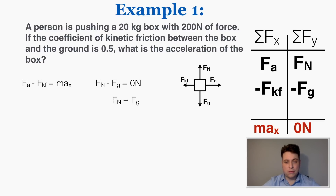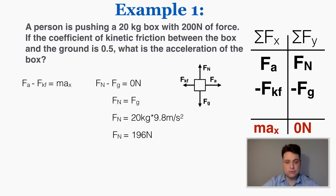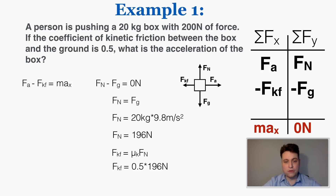In the y direction, the normal force has to equal the force of gravity. When I multiply out the force of gravity I get 20 times 9.8, so the normal force must be 196 Newtons. I also know that the force of kinetic friction equals the coefficient of friction times the normal force, so multiplying that out gives a force of kinetic friction of 98 Newtons.